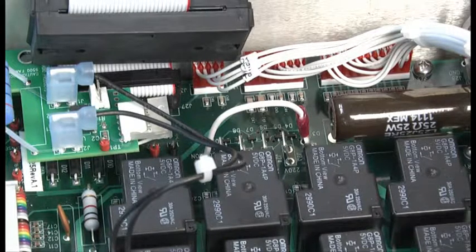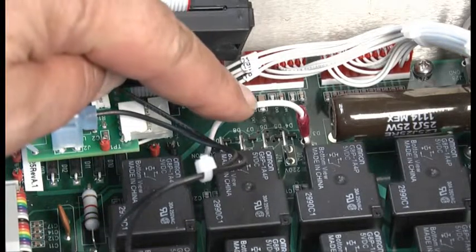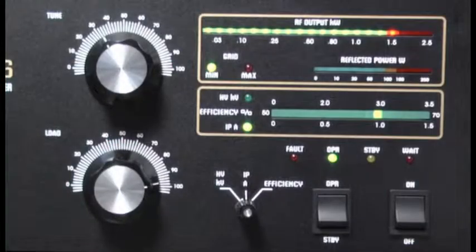The input voltage is easily set using a flying jumper connector on the mains board. At 1500 watts output, the amplifier draws about 13 amps at 240 volts AC.